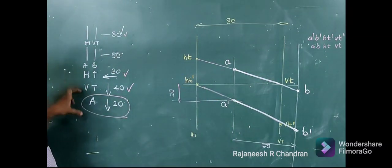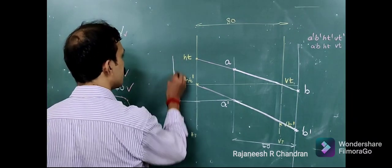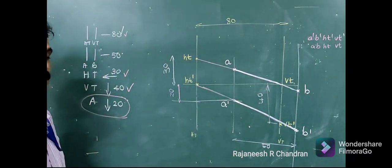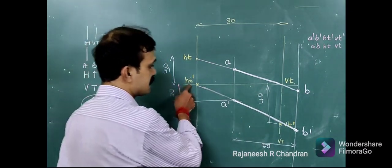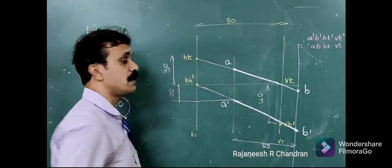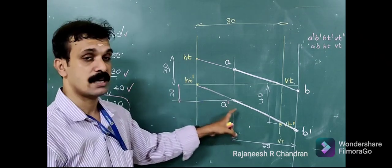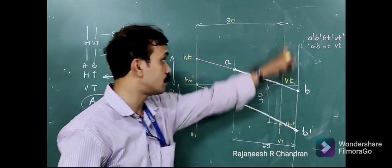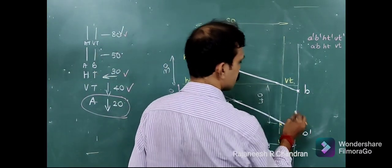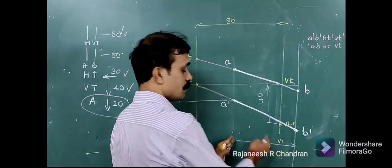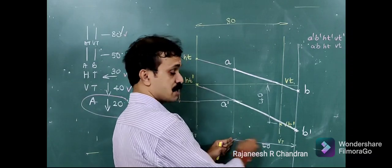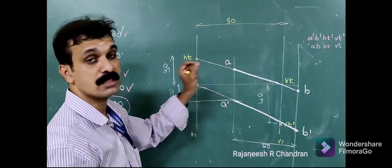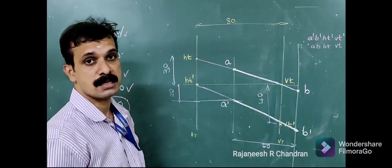We know HT' will always lie on the XY line and VT will always lie on the XY line, so we can mark HT' and VT. Then we locate HT — given 30 mm behind — and VT — given 40 mm below — which we have marked. Point A is 20 mm below, and since HT', VT', A', B' always lie on the same line, at a distance of 20 from the XY line we draw a line. Extending through the intersection, we get A'. Drawing a projector and measuring 50, we draw another projector, giving us A, B and A', B'.